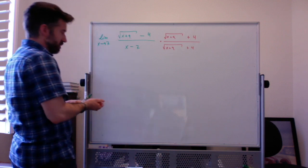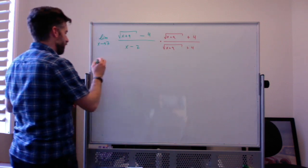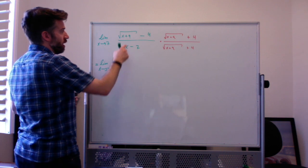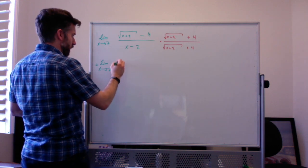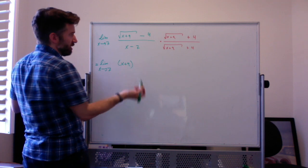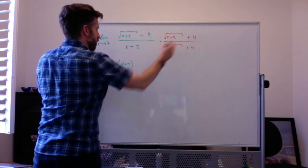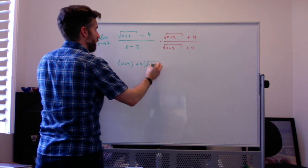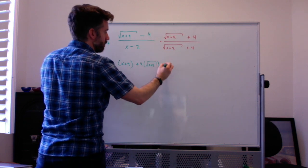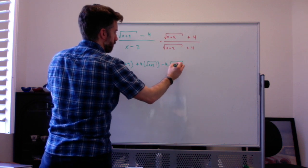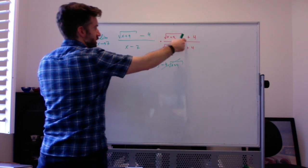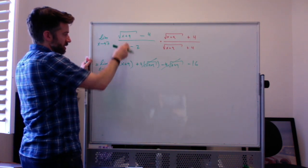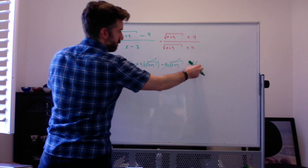The reason we're doing this specifically is so that we get the square root squared away. So I end up with the limit as x goes to 7. The square root of x plus 9 is squared, so just x plus 9. I'll write the middle terms to show they cancel: this times 4 and this times negative 4 — those cancel. And then negative 4 times negative 4 is minus 16, or equivalently, the square root of x plus 9 squared minus 4 squared.